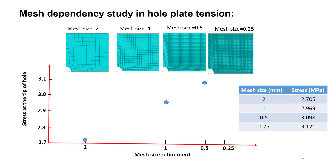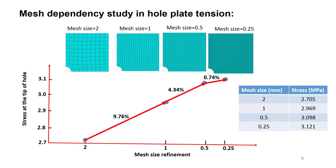Finally, we calculate the stress with a mesh size of 0.25. In each step, we reduce the mesh size by half. When reducing the mesh size from 2 to 1 millimeter, we have around 10 percent change in our result. In the next step, by reducing the mesh size by half again, we have only 4 percent change.